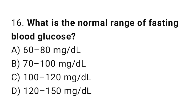Q16: What is the normal range of fasting blood glucose? The correct answer is B, 70 to 100 mg per deciliter.